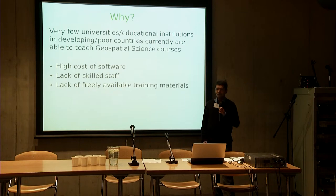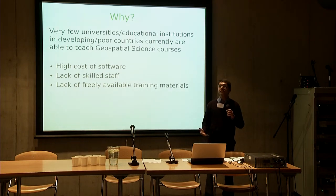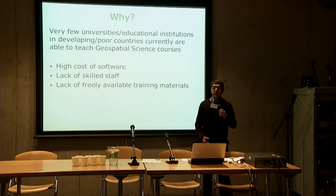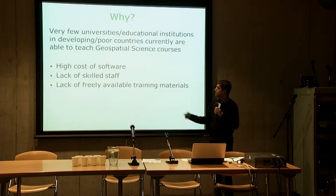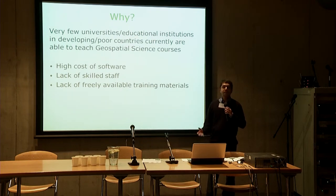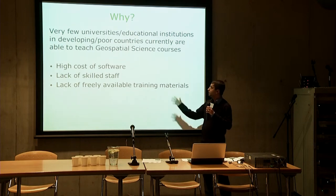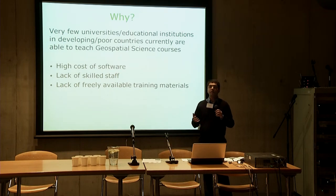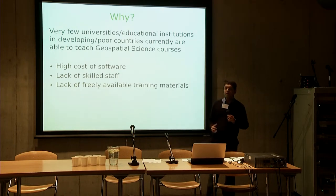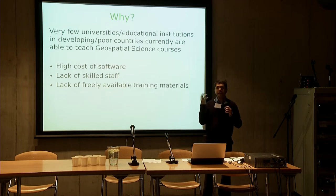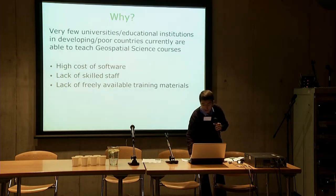Why was it important? Because very few universities in developing countries could afford to run geospatial science courses, and even now it's only slightly changing, but now it's changing rapidly. The biggest reason was the high cost of proprietary software — this costs thousands of pounds per license — so it's very expensive for universities in developing countries to even think about teaching students geospatial science, which covers computer-based mapping and things like that. There's also lack of skilled staff and freely available training materials, so you need to create a way to combine all these things to make sure more and more universities are able to teach those students.